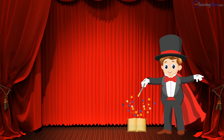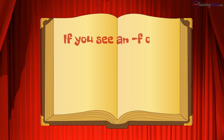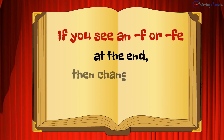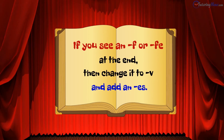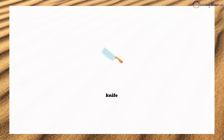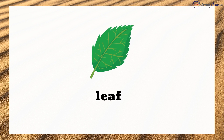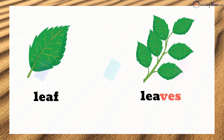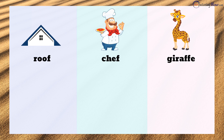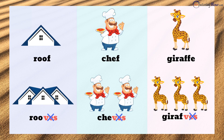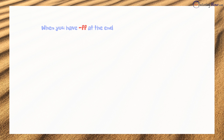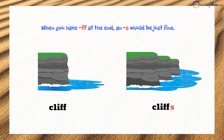Aaron waves his wand again and a new trick is out. If you see an F or FE at the end, then change it to V and add an ES. So knife becomes knives and leaf becomes leaves. But don't try this on roof, chef, or giraffe, because they take an S. When you have an FF at the end, an S would be just fine — cliff is cliffs when many.